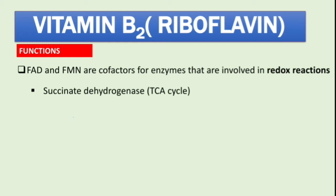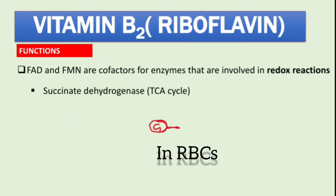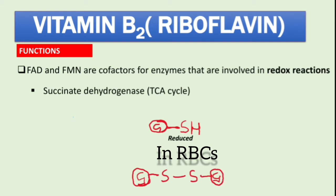The second function relates to glutathione, an important natural antioxidant in our body. Glutathione appears in two forms: a reduced form, which contains a sulfhydryl (SH) group, and an oxidized form, which contains disulfide bridges.